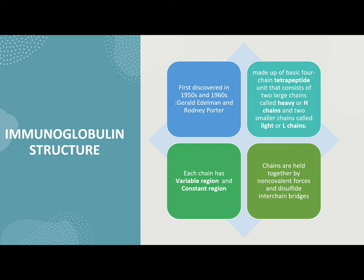The structure of immunoglobulin was first discovered in the 1950s and 60s by Gerald Edelman and Rodney Porter. They are made up of a basic 4-chain structure — 2 light and 2 heavy chains. This is the heavy chain, while the light chain is the smaller one. They are made up of 2 heavy chains and 2 light chains, a total of 4 chains. They are a tetrapeptide unit, meaning they are divided into 4 segments.